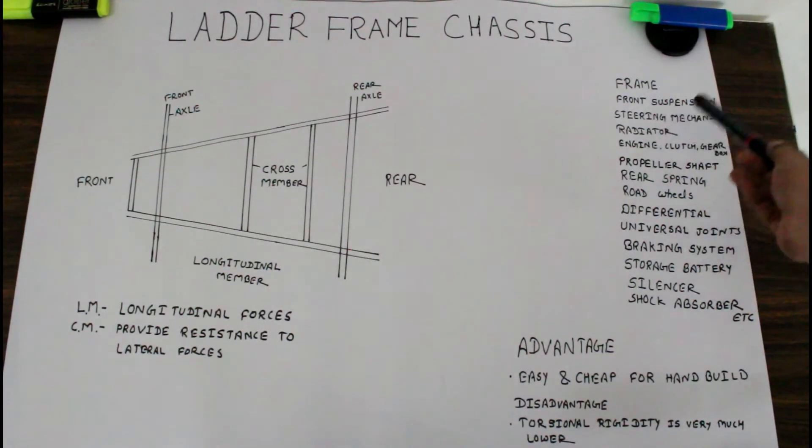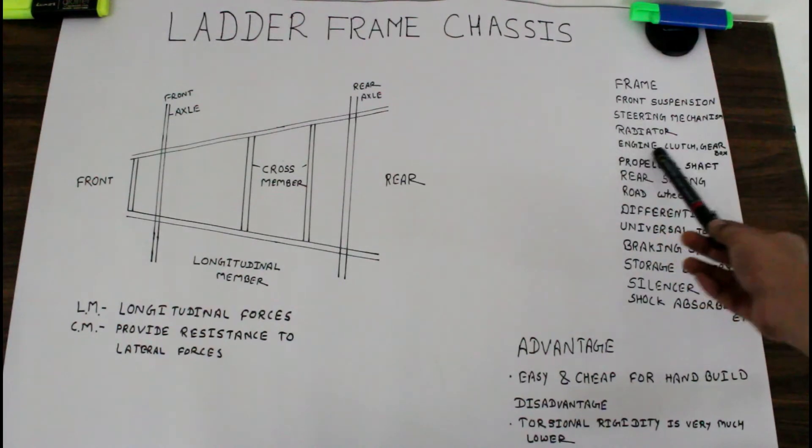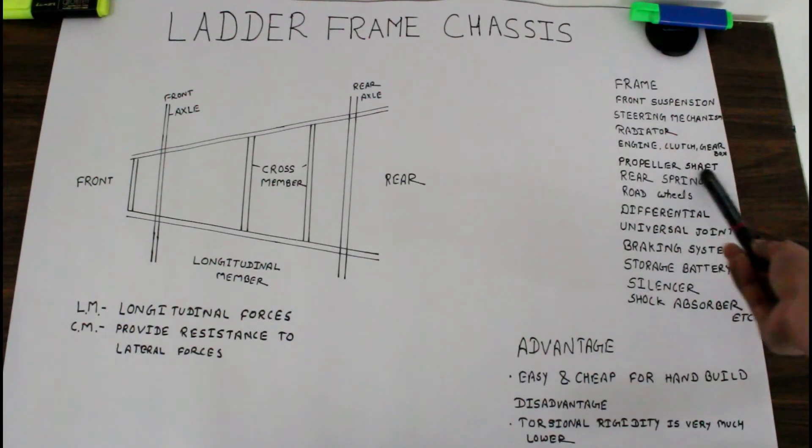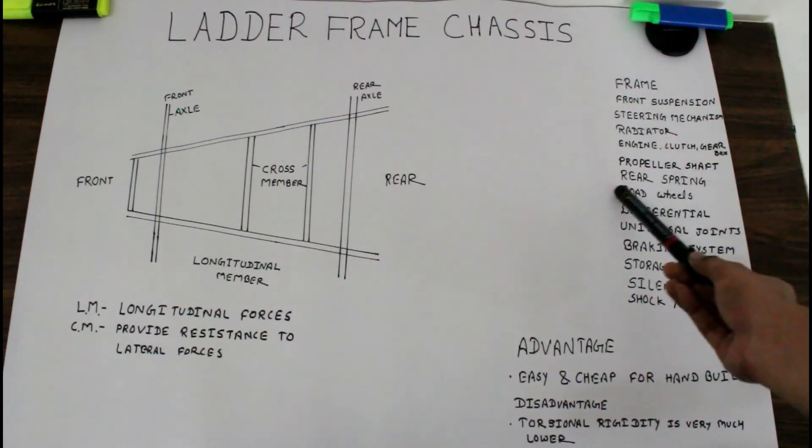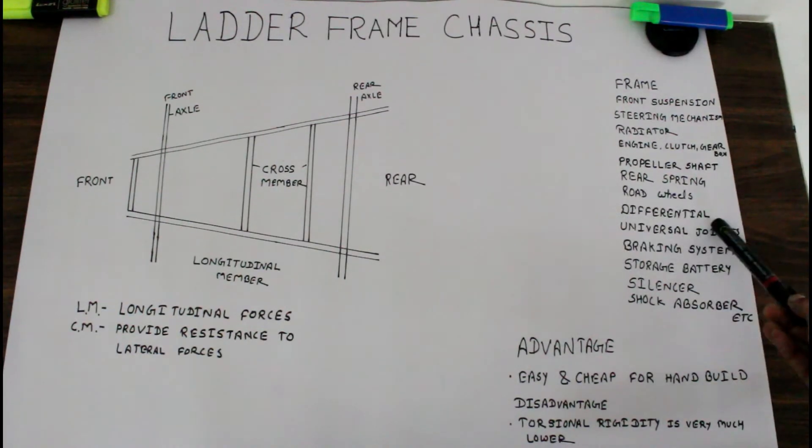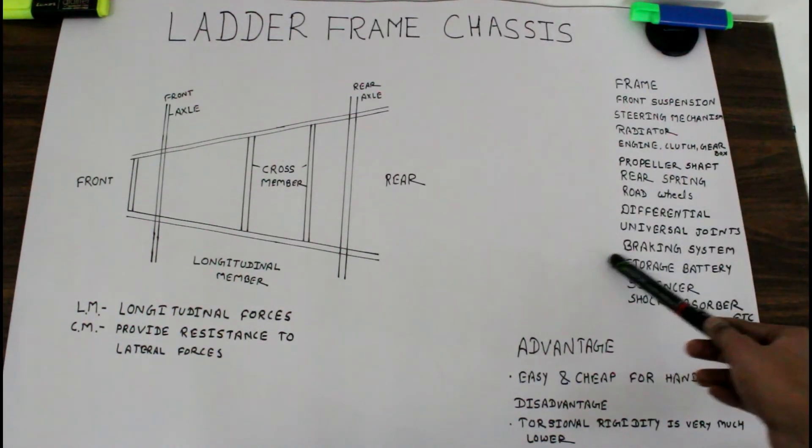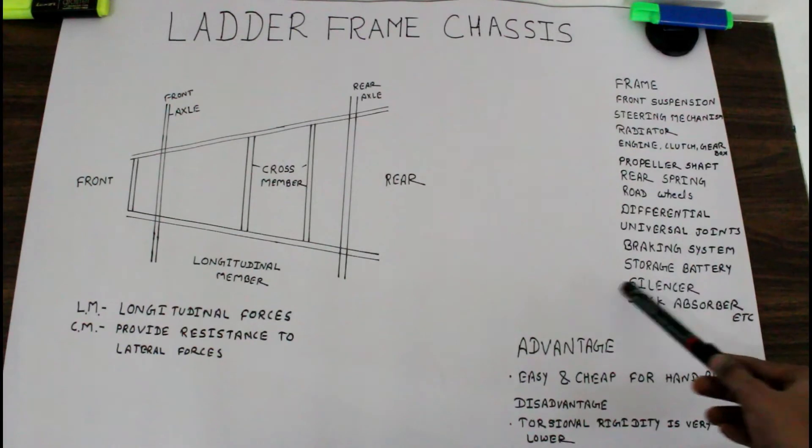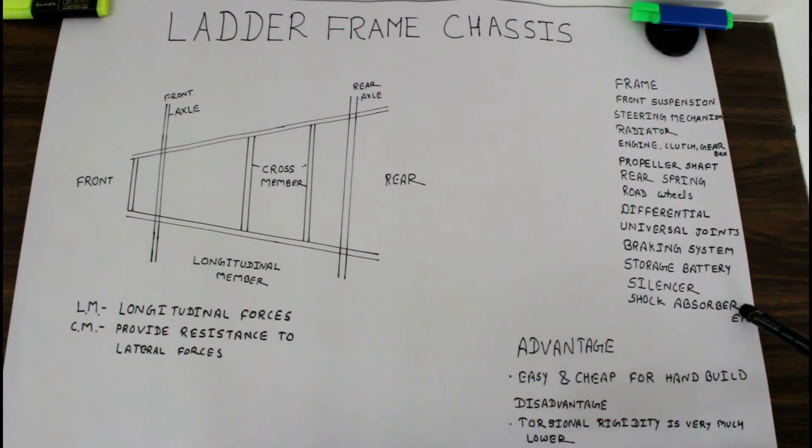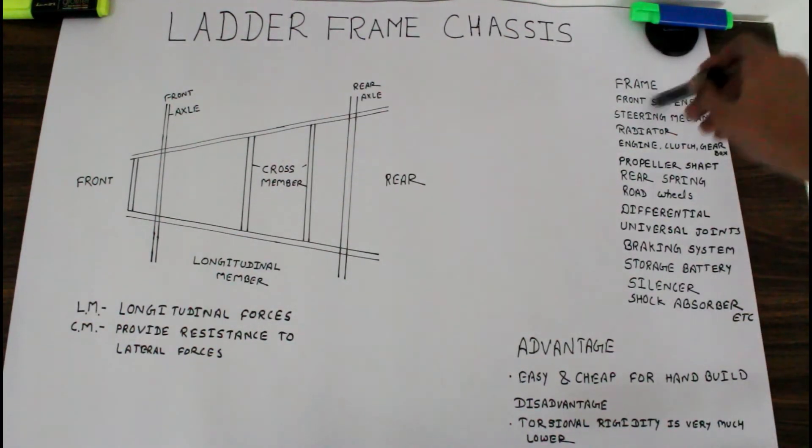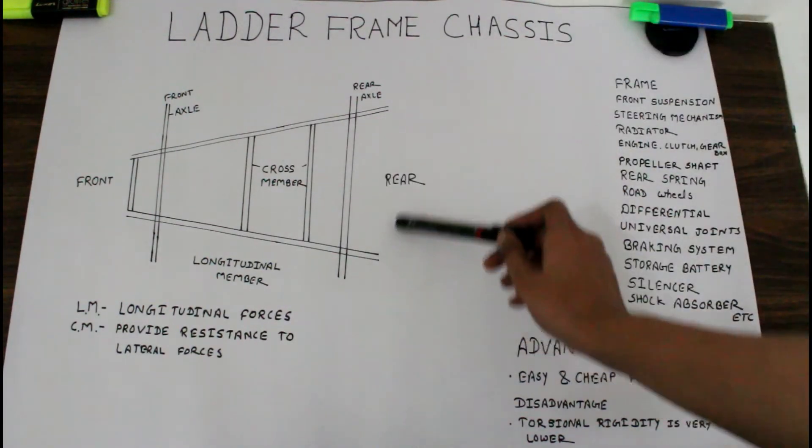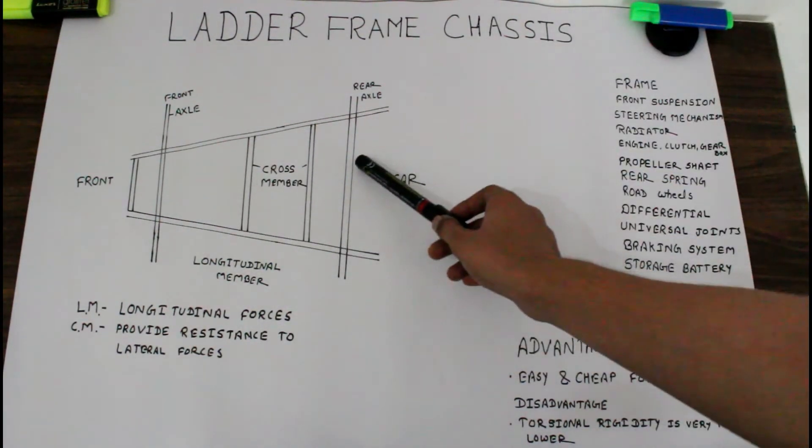Front suspension, steering mechanism, radiator, engine, clutch, gearbox, propeller shaft, rear spring, road wheels, differential, universal joint, braking system, storage batteries, silencer, shock absorber, etc. All these mechanical parts can be mounted on this frame chassis.